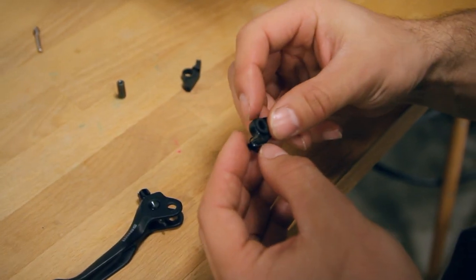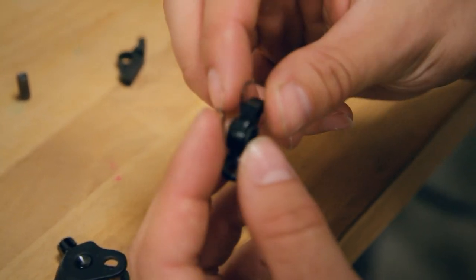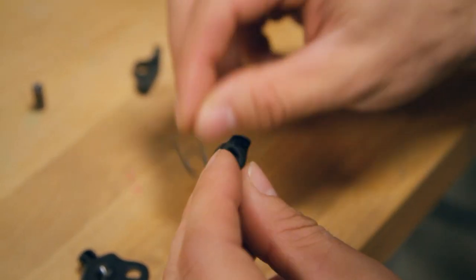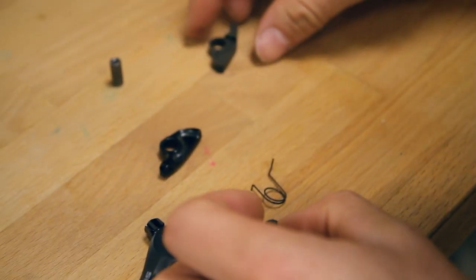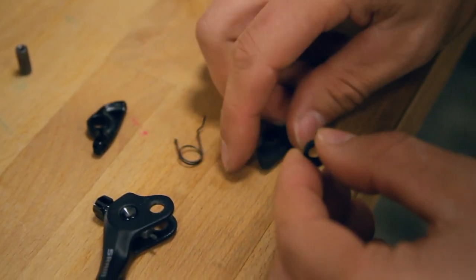So the way this cam is assembled into the lever, there's the spring on one side and then there's this plastic bushing in the middle. That plastic bushing has a lip on one side.